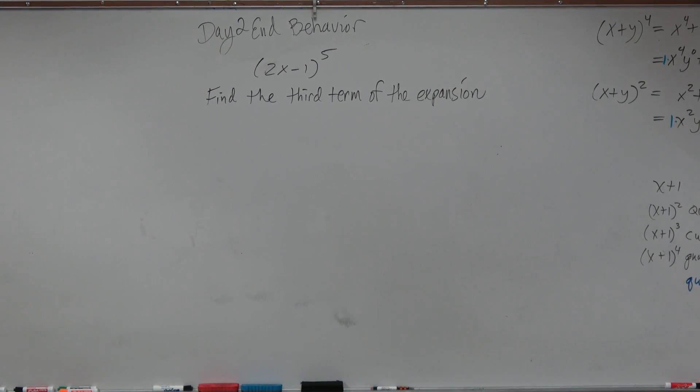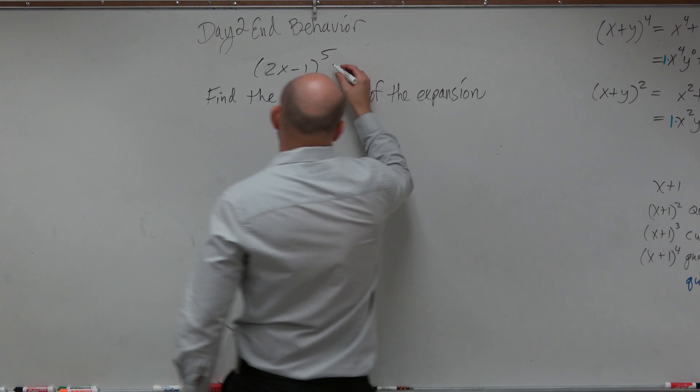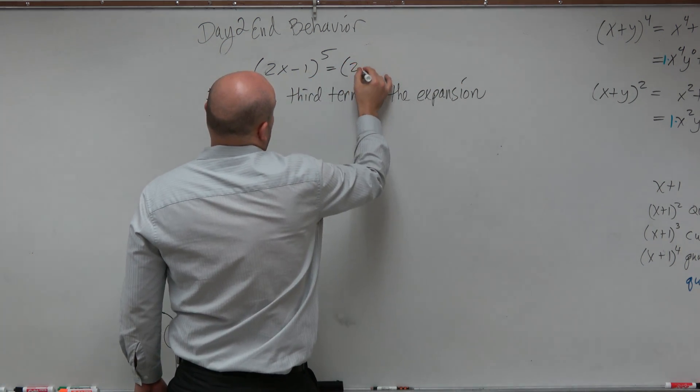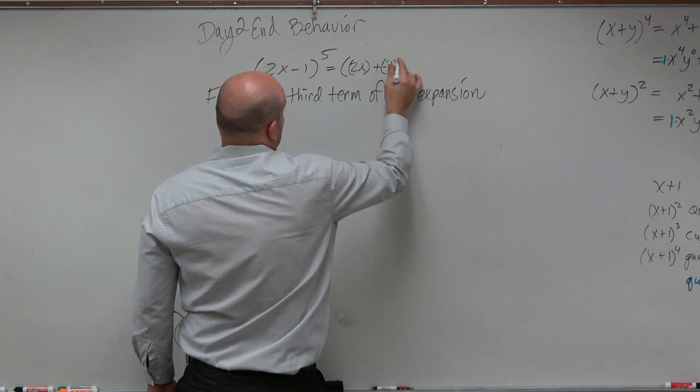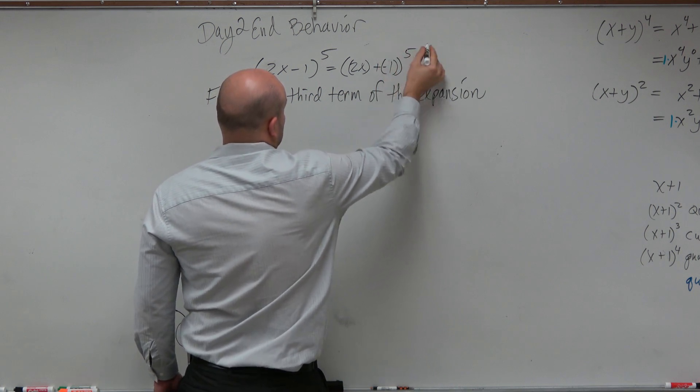So again, if we're going to look at this, parentheses is everything. Let's rewrite this as 2x plus a negative 1 raised to the 5th power.